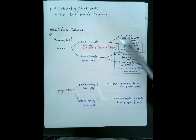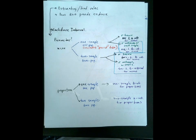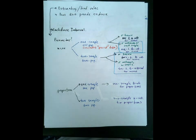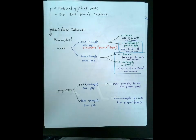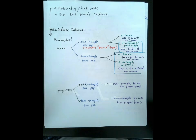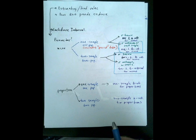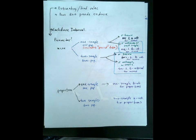If you decide it's a confidence interval, the next thing to think about is: what parameter am I actually supposed to estimate? For our purposes, the two main ones are a mean or a proportion. So you have to decide: is it a confidence interval involving means, or a confidence interval involving proportions?